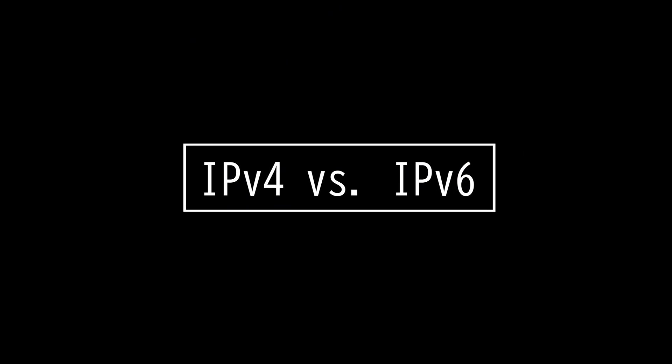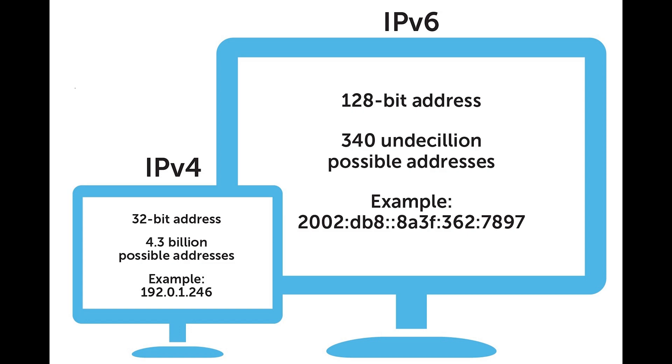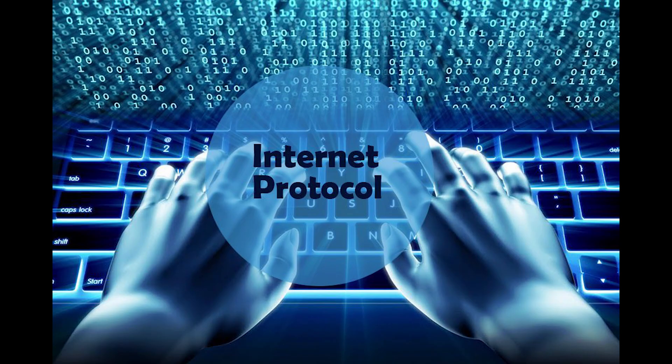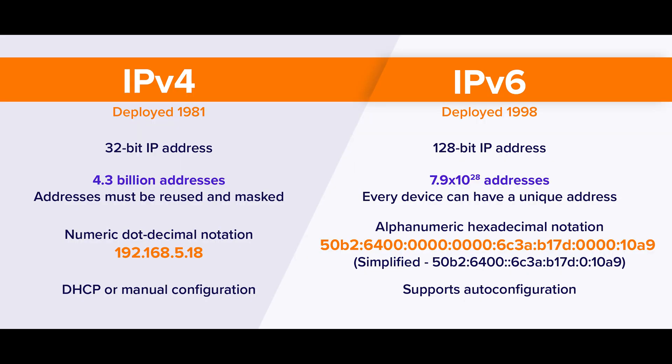This video is on IPv4 versus IPv6. Internet Protocol version 4 and 6 are used to route and address packets for networking devices. IPv6 was made to replace IPv4. IPv4 uses a 32-bit address scheme allowing 2 to the 32 power addresses, meaning about 4.3 billion addresses, but we started running out of addresses thanks to technological advancements.